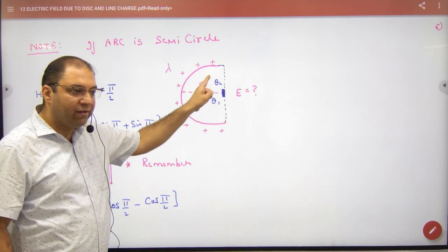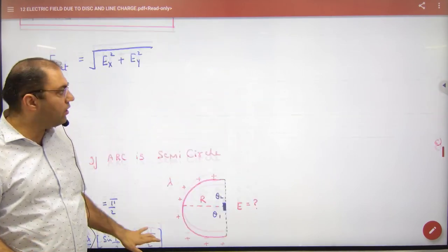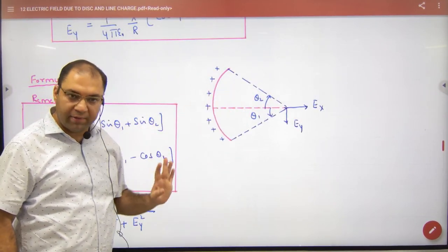90 and 90. If we make 90 and 90, then it will be a semicircle. So what will be E?